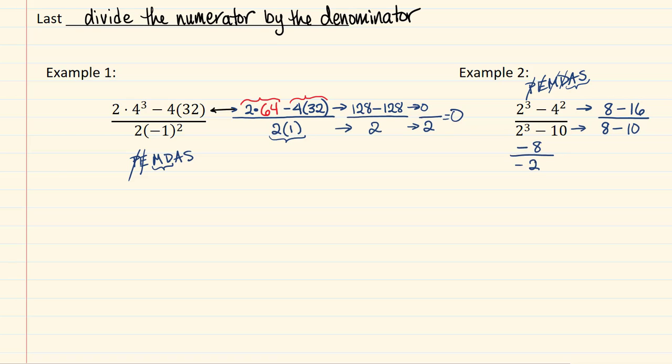A negative divided by a negative is a positive, and so I have 8 over 2, which reduces to 4. And that's my final answer.